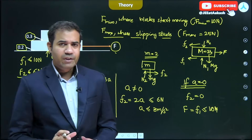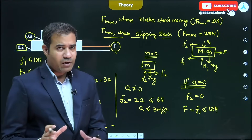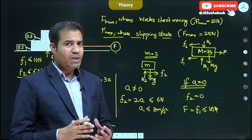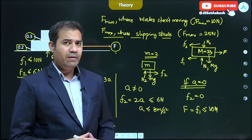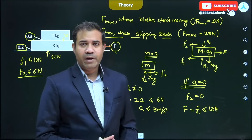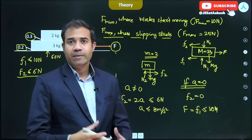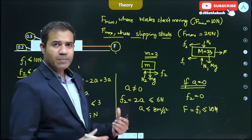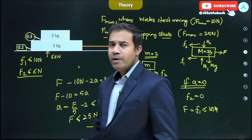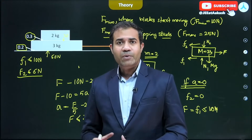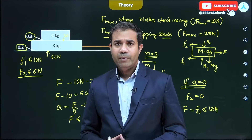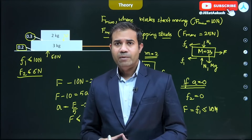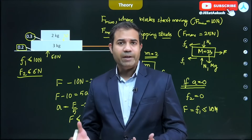The analysis of this type of problem can be summarized as follows: there is a state where both blocks are stationary, then they start moving together as a system, and if we increase the force further, slipping starts. For this particular problem: for any force less than 10 Newtons the system does not move; it starts moving when force exceeds 10 Newtons; and when force exceeds 25 Newtons, the two blocks start to separate.